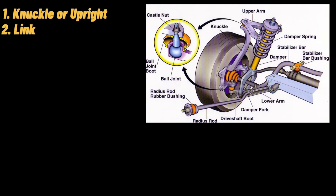2. Linkages. Linkages are like the frame of a suspension system. All the parts of the suspension system are connected together with the help of linkages. These linkages have universal joints on both ends, which help in smooth connections between different components. Generally, there are three types of linkages present in the suspension system.